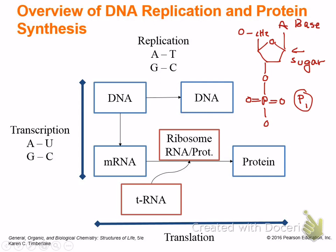DNA can also be turned into RNA, and there are actually three different kinds of RNA. One of them is messenger RNA. When you take DNA and make RNA, you base-pair to RNA nucleotides using an enzyme. Just like DNA uses DNA polymerase to make its copy, when you make RNA there's an RNA polymerase.